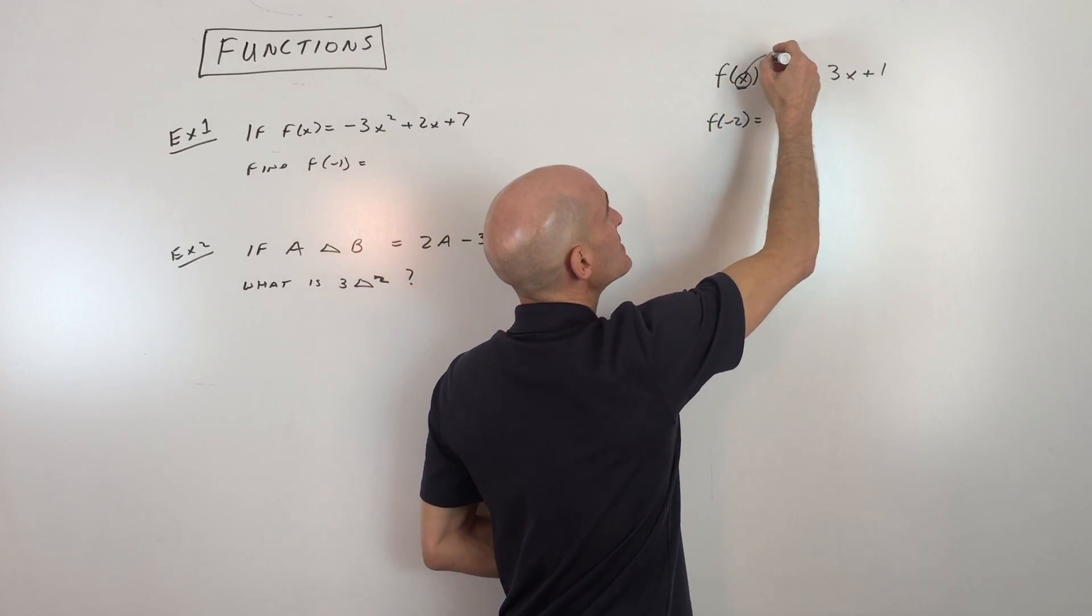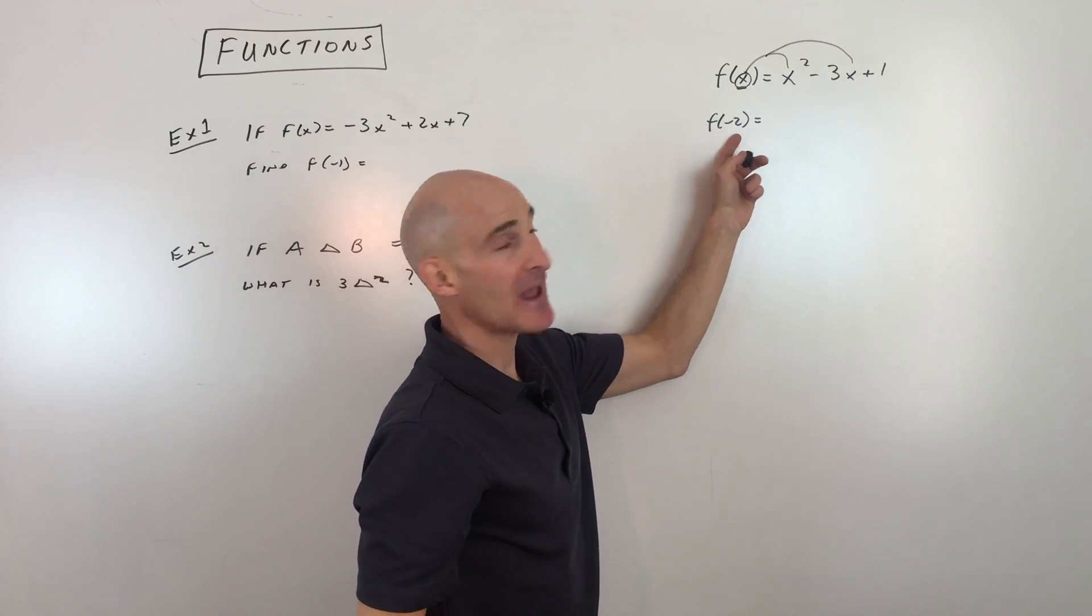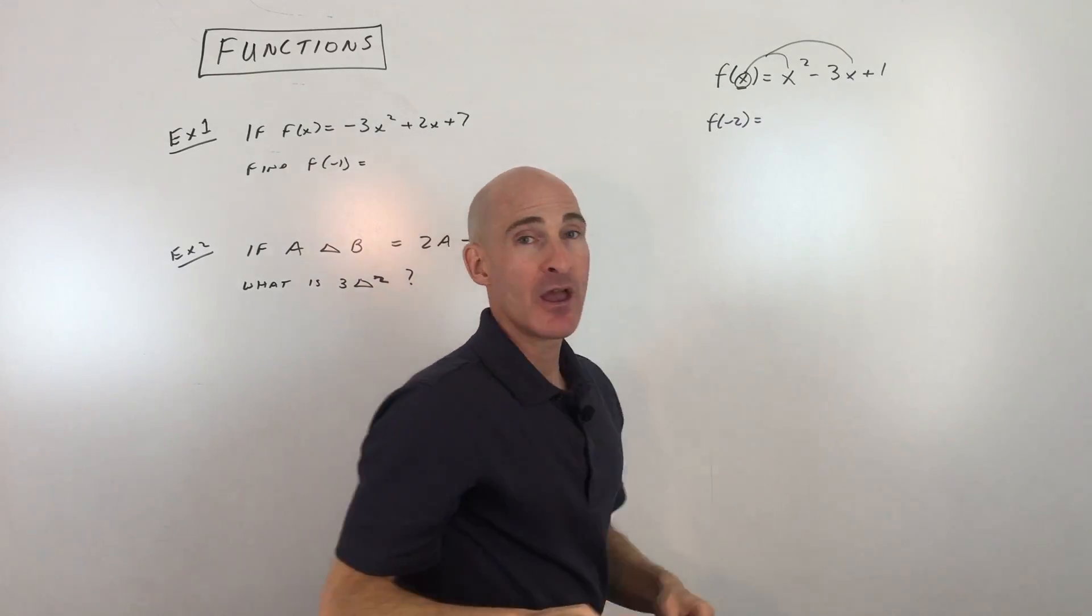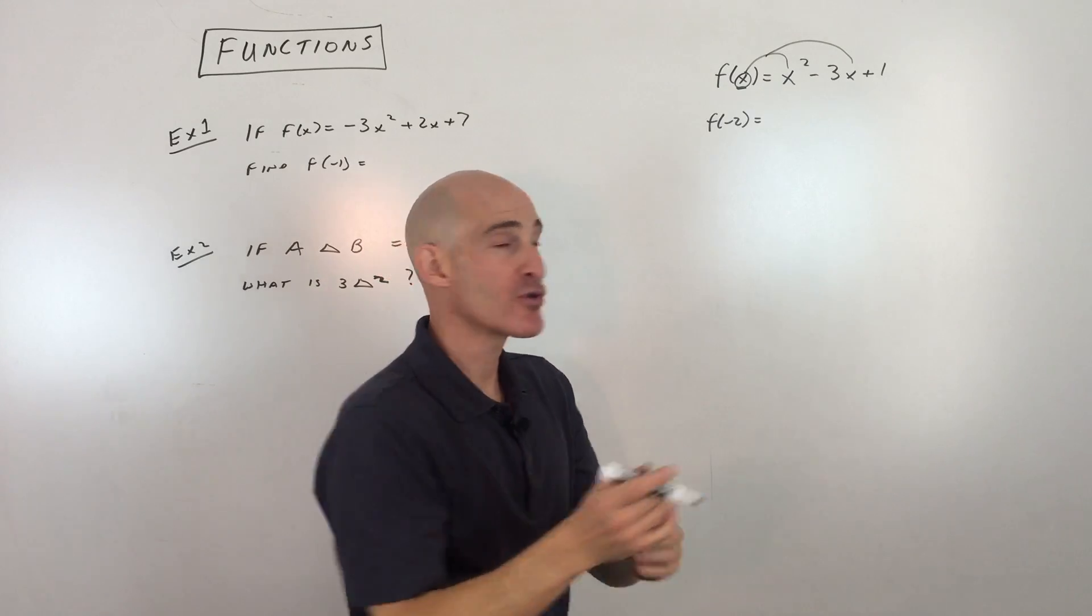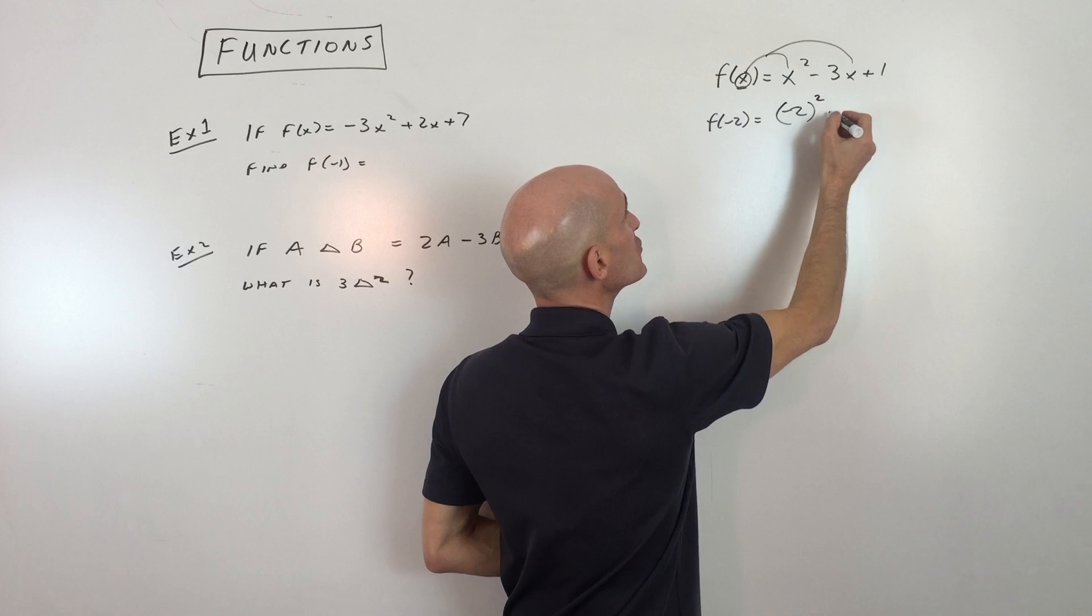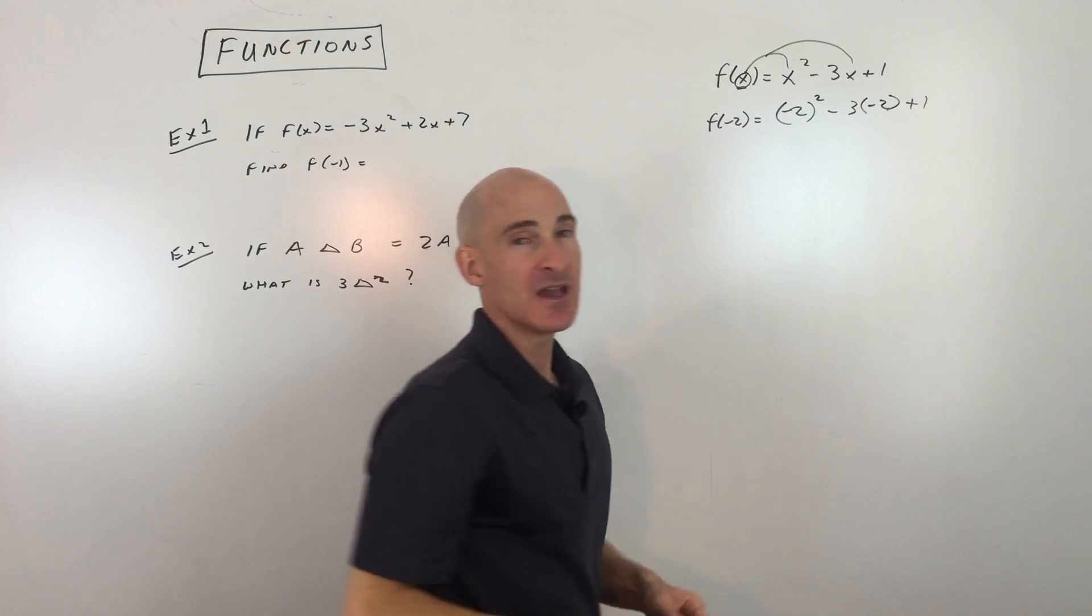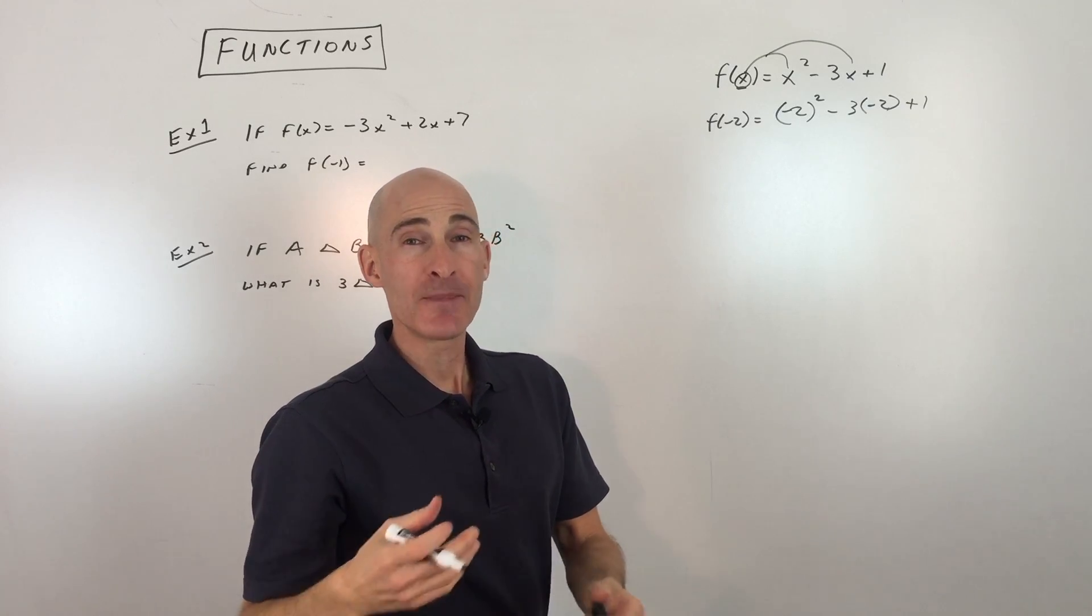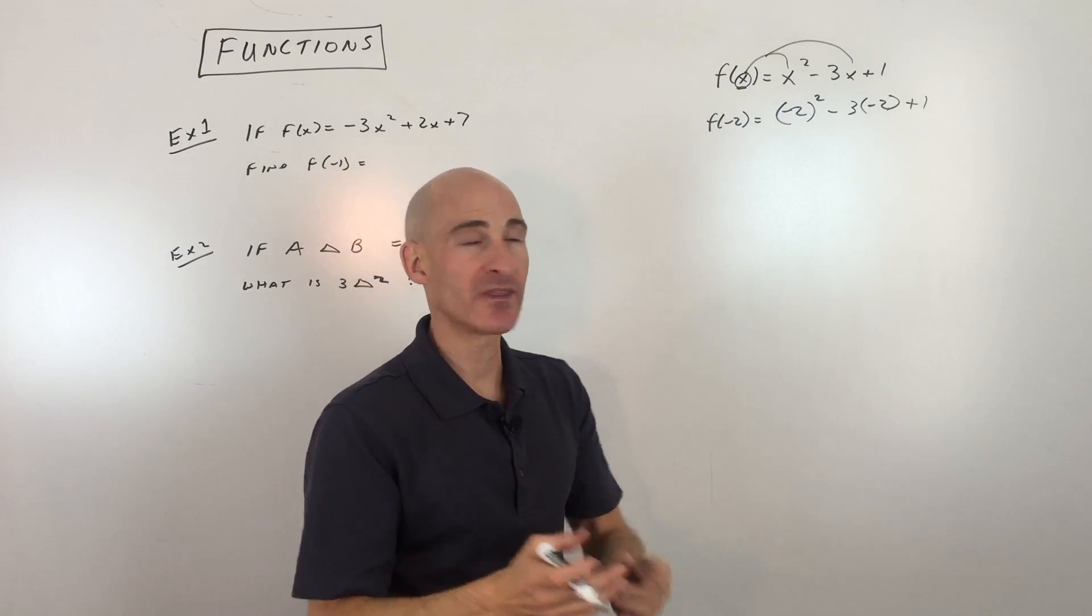You're going to be putting that in place of x on the right side of the equation. So say for example they say find f of negative 2. What we're going to do is we're going to put this negative 2 in place of x. Now if you're doing this on your calculator or even if you're doing this by hand, I recommend putting it in parentheses so that it's treated as a group. So it's the whole thing, negative 2 squared minus 3 times the whole thing negative 2 plus 1. If you don't put it in parentheses when you do it on your calculator or even if you do it by yourself, when you're doing that order of operations, it could give you a different answer unless you take it as an entire group like that.